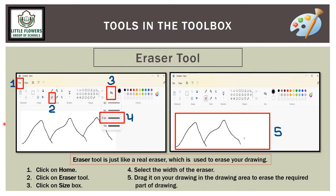The eraser tool works just like a real eraser to erase your drawing. To use it: click on the Home tab, then click on the eraser tool from the menu ribbon. Go to the eraser size box, click on it, and a dropdown will appear. Select your eraser size or width, then drag it over the drawing area to erase the required part.